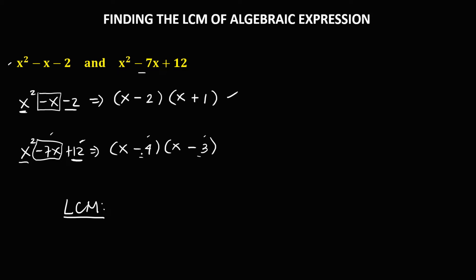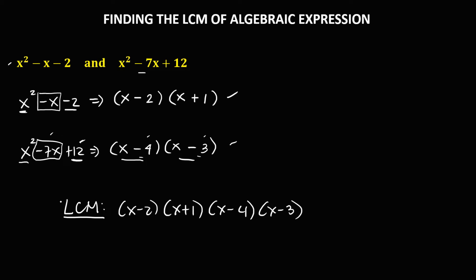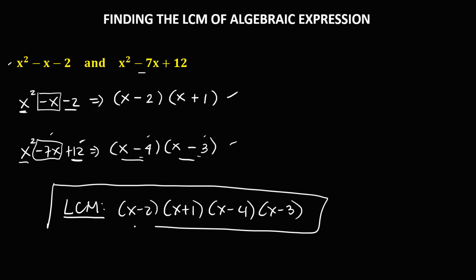To find the LCM, copy the first expression: (x minus 2)(x plus 1). Then for the second expression, x minus 4 needs to be added, and x minus 3 also needs to be added. Therefore, this is now the LCM of this expression.